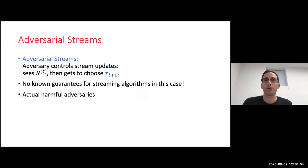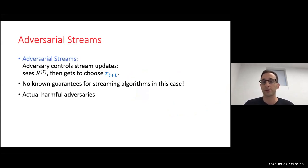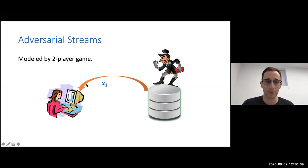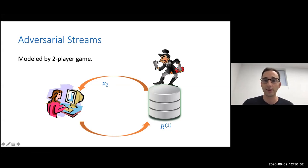This brings us to defining adversarial streams. We have an adversary who controls the stream of updates — he sees r_t and then gets to choose x_{t+1}. There are no guarantees for streaming algorithms in this case, and we actually have examples of harmful adversaries. In the adversarially robust streaming model, the adversary decides on the elements of the stream. He sends x_1 first with no adaptivity. The streaming algorithm processes it, stores some small state, and sends back r_1 to the adversary.